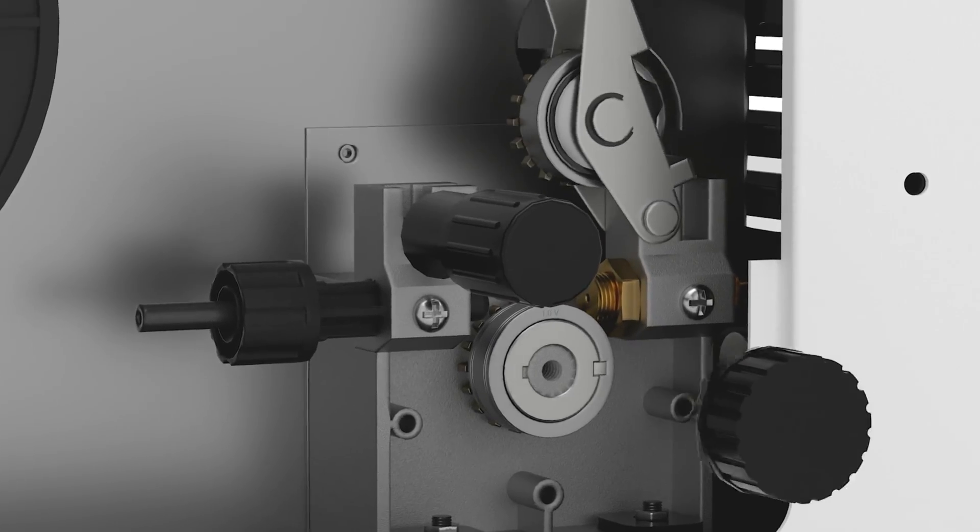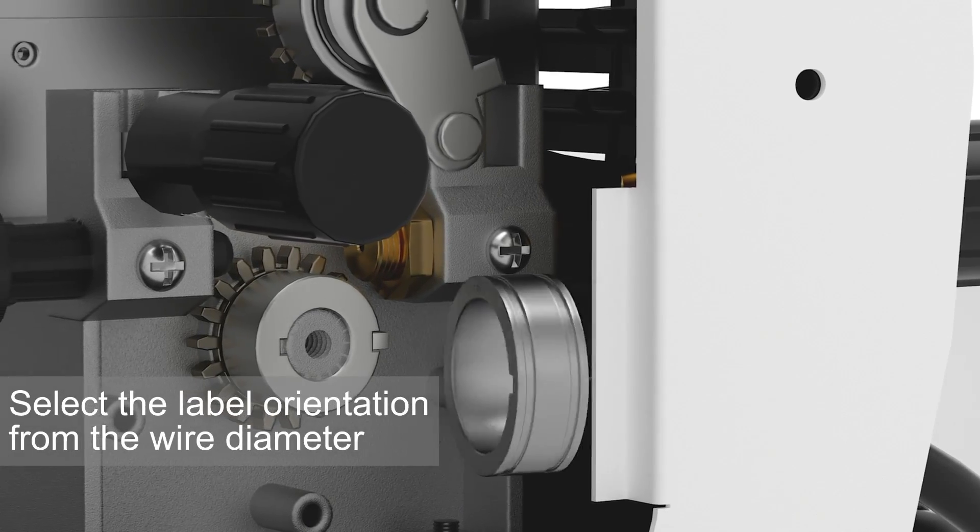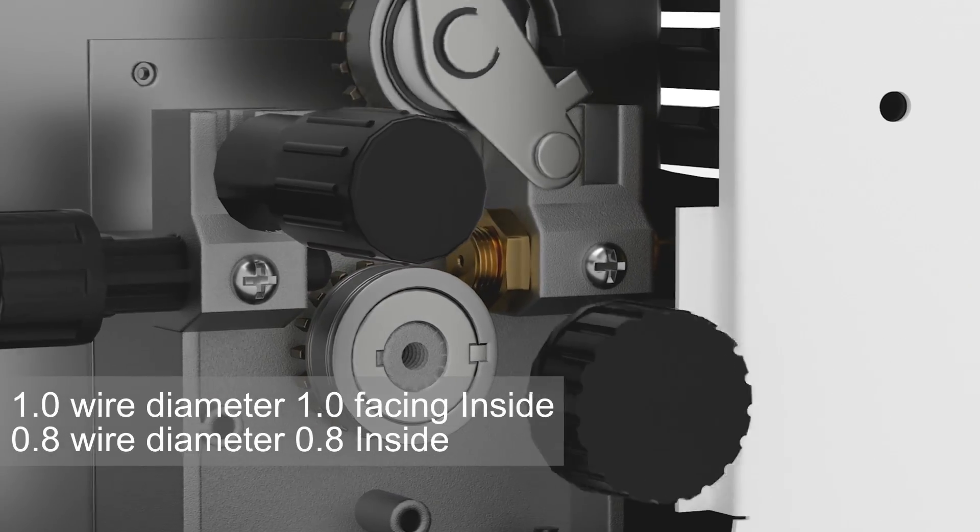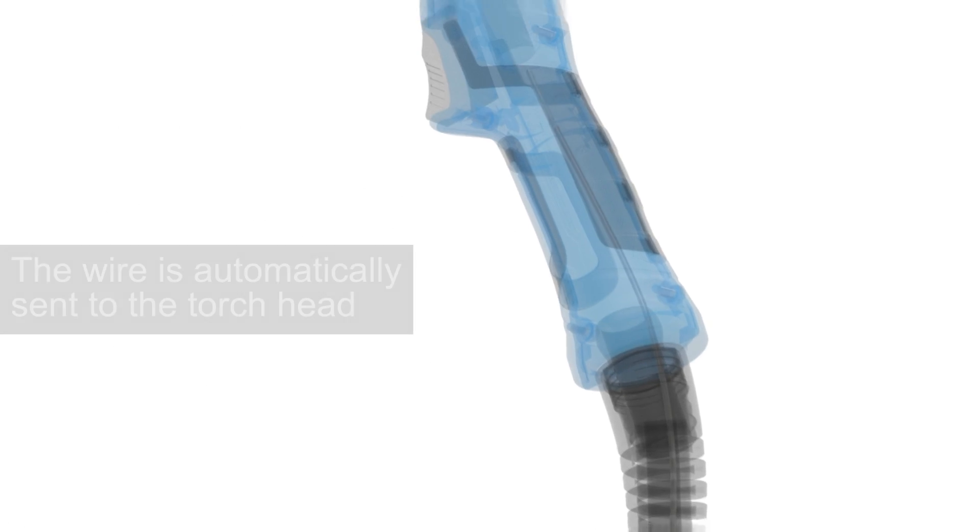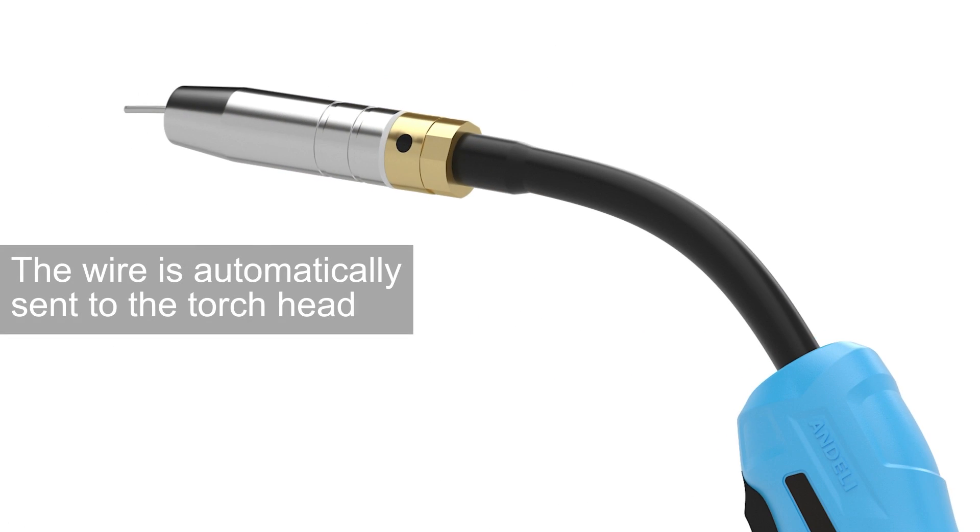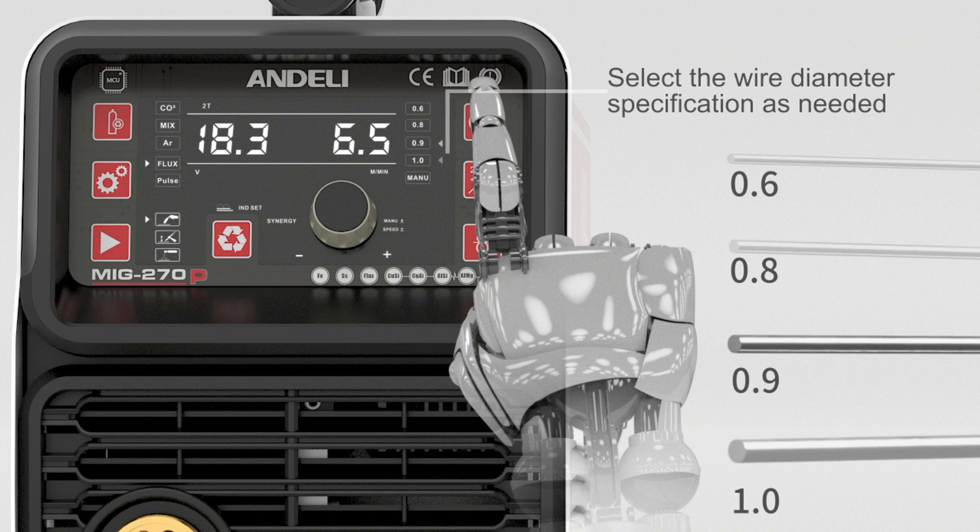Carbon steel or aluminum welding. Select the label orientation from the wire diameter: 1.0 wire diameter facing inside, 0.8 wire diameter with 0.8 inside. The wire is automatically sent to the torch pad. Select the wire diameter specification as needed.